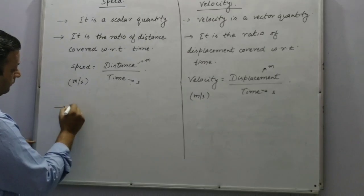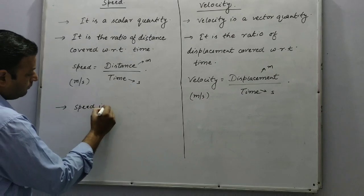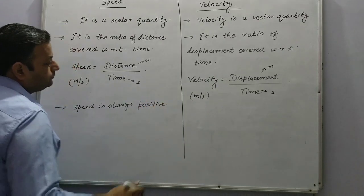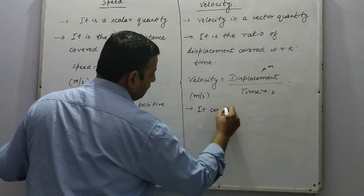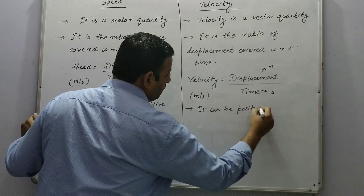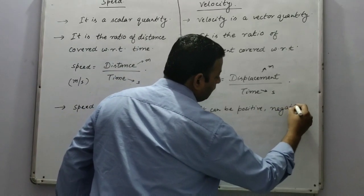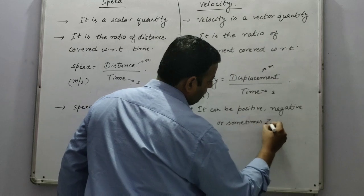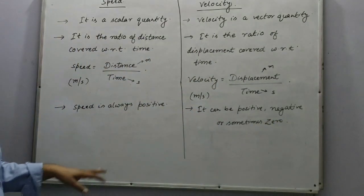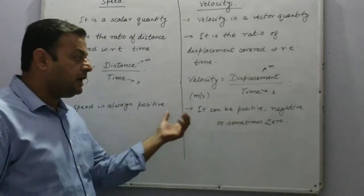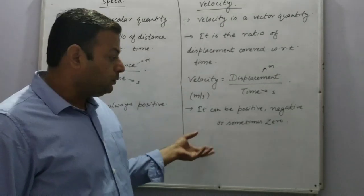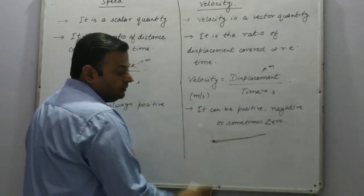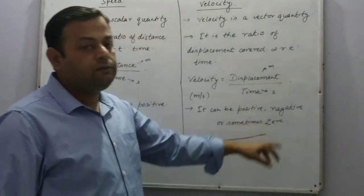Point number three: speed is always positive, whereas velocity can be positive, negative, or sometimes zero. Suppose a person starts a journey from one point, goes in a direction, and comes back — the displacement will be zero, so the velocity will also be zero.